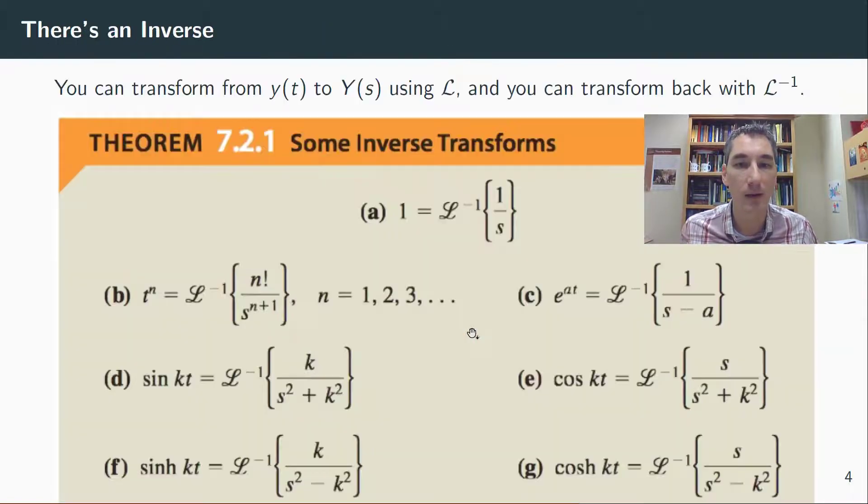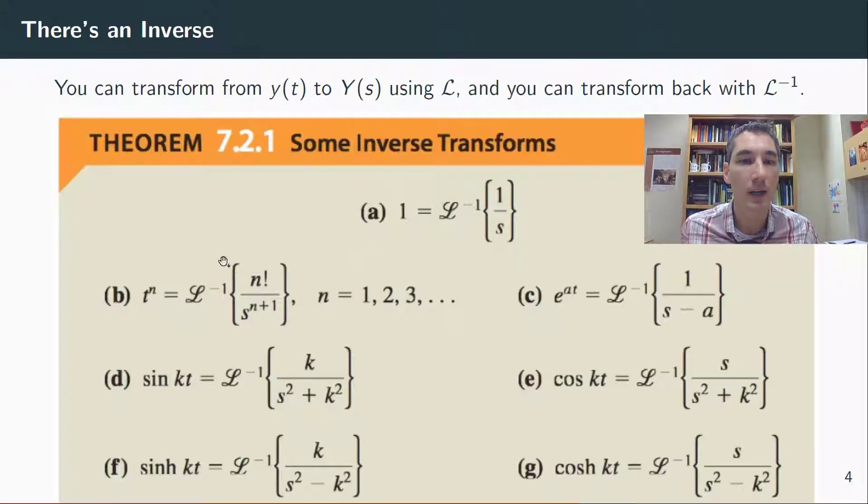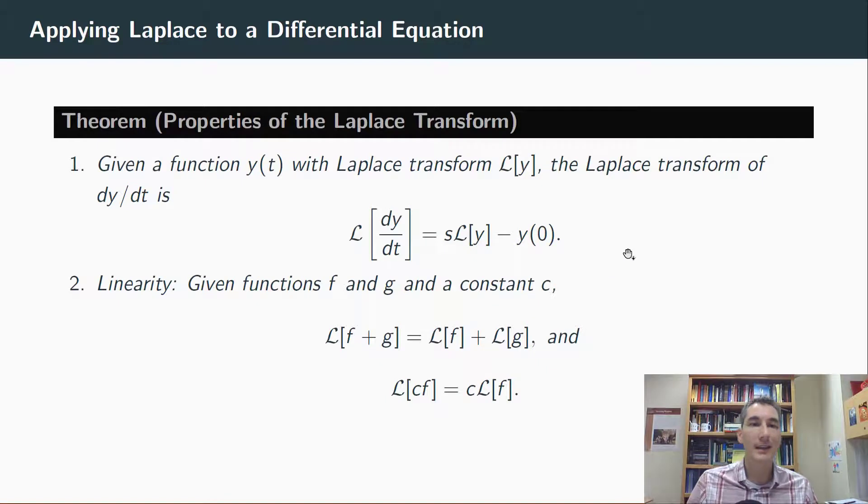Everything on this slide is really just the same as what was on this slide but backwards. So if L of t to the n is n factorial over s to the n plus 1, then the inverse of n factorial over s to the n plus 1 will be t to the n. So we're just going backwards from the frequency domain back into the time domain. These are the standard functions that we'll use.